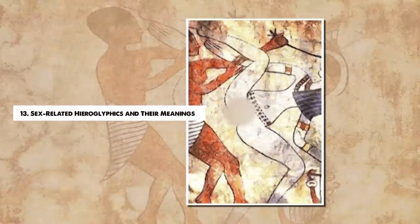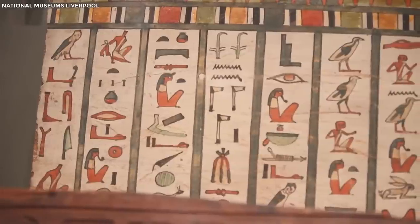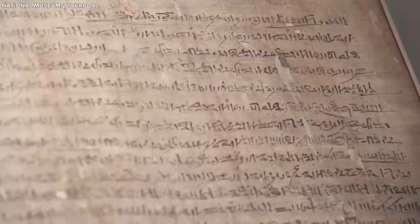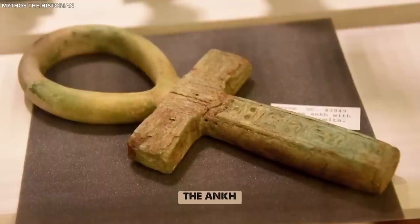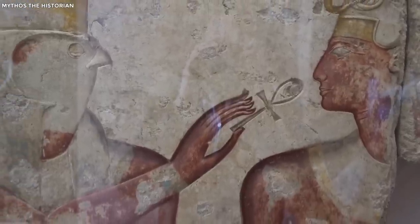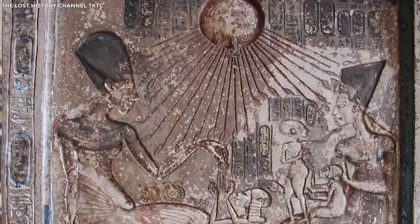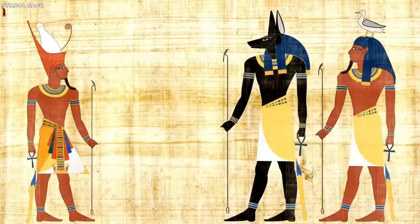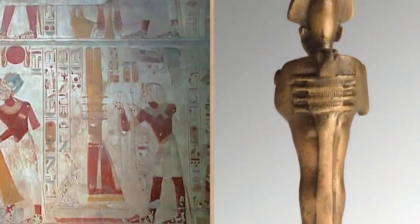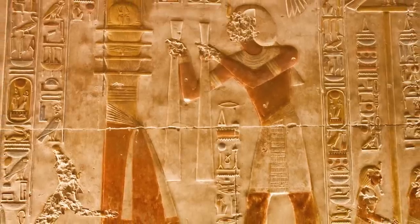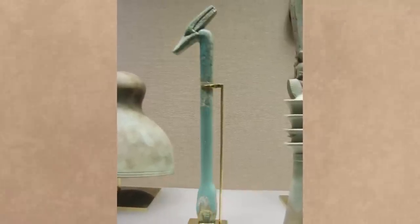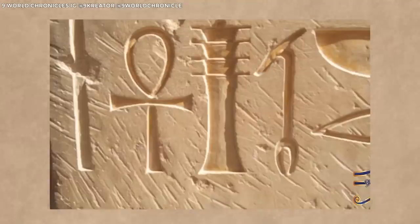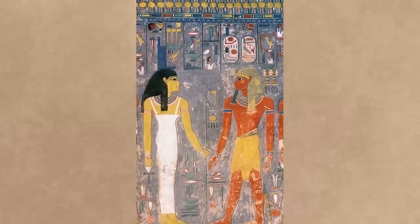13. Sex-Related Hieroglyphics and Their Meanings. Hieroglyphics, the formal writing system of ancient Egypt, are essential to understanding Egyptian culture, including their views on sex. Several hieroglyphics depict sexual activities or body parts, often associated with fertility and creation. The Ankh, a symbol of life, was one such symbol with sexual connotations — it represented the union of male and female and was often depicted in the hands of gods, bestowing life upon the pharaoh. Phallic symbols like the Djed, which represented the phallus of the god Osiris, were common, serving as a symbol of stability and resurrection and embodying the regenerative power of sexual activity. The Was scepter, another phallic symbol, represented power and dominion and was often depicted in divine and royal iconography, underlining the connection between sexual potency and authority.